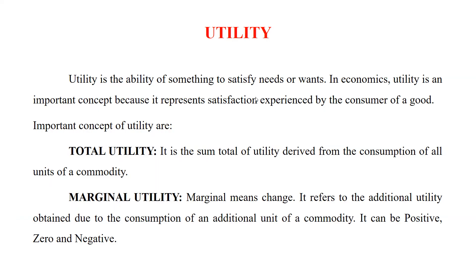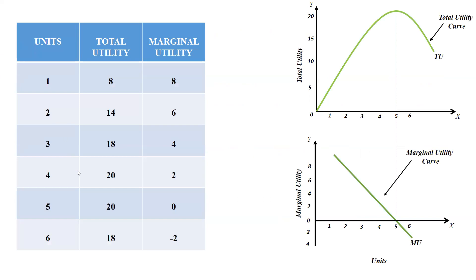We can see here this schedule reflecting the same thing. Units means we are talking about chapati: one, two, three, four, five, six — or we can say bread in English. Total utility values are eight, fourteen, eighteen, and so on. Marginal utility values are eight, six, four, two, zero, minus two. When the person is consuming the first chapati, it is giving eight units of utility.